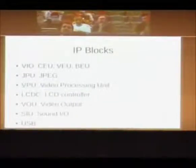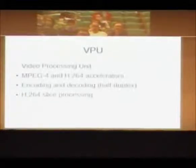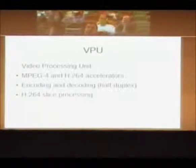What I'm going to talk about today are some of the IP blocks in this chip. There are various IP blocks: CU is a camera unit, VEU is the video engine unit, a blending engine unit, JPEG unit, video processing, LCD controller, video out, sound. Each of these can be independently controlled. The video processing unit I won't talk about too much today because it does non-free codecs and you need a binary blob to get H.264 support.